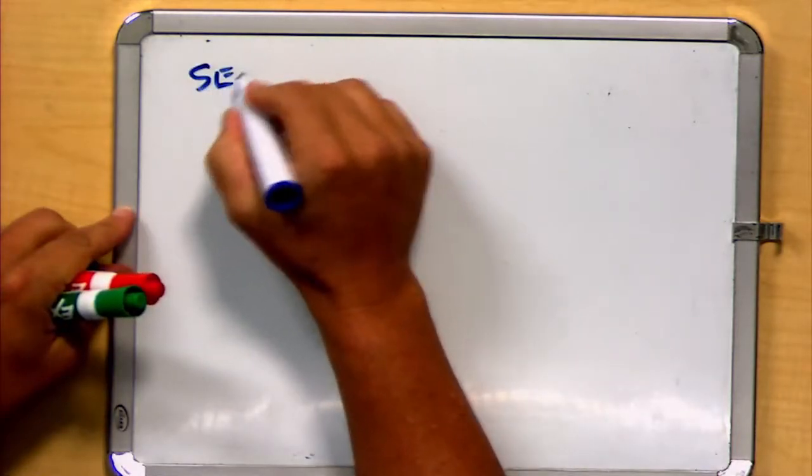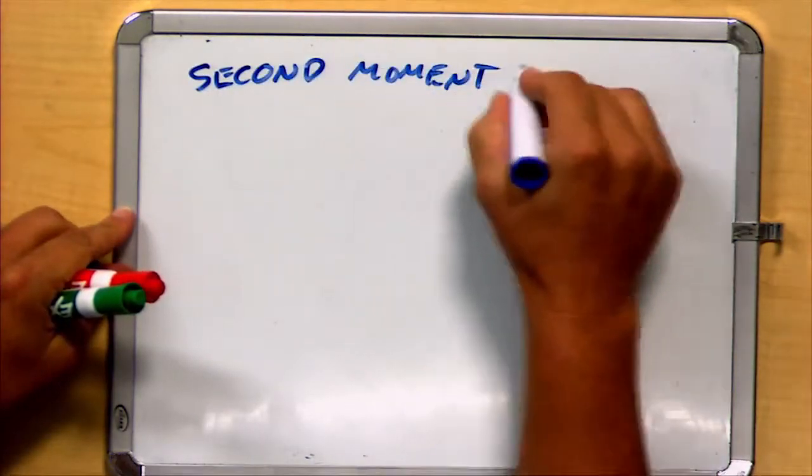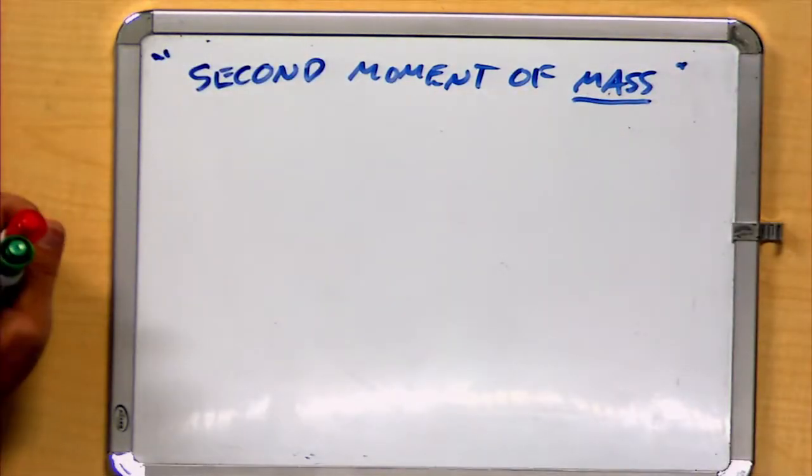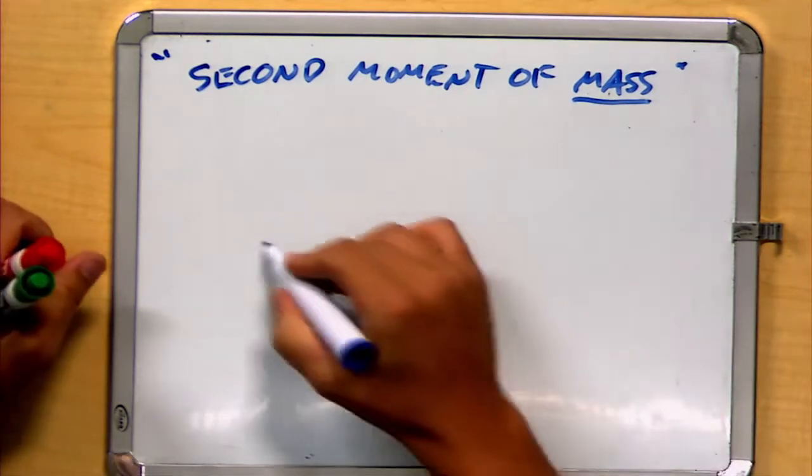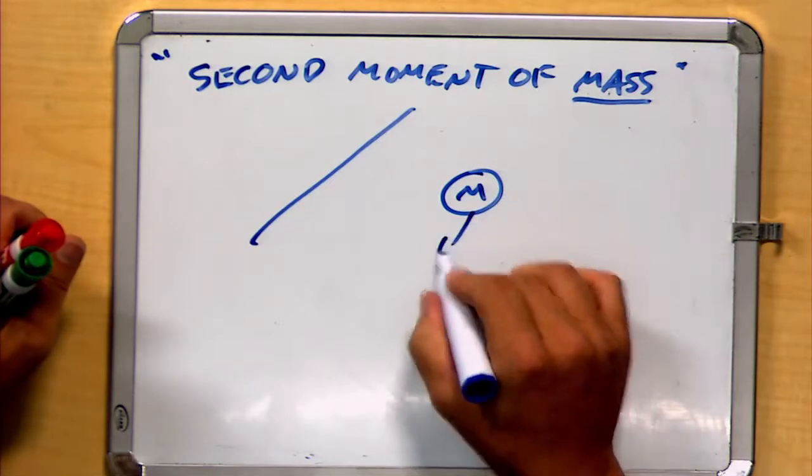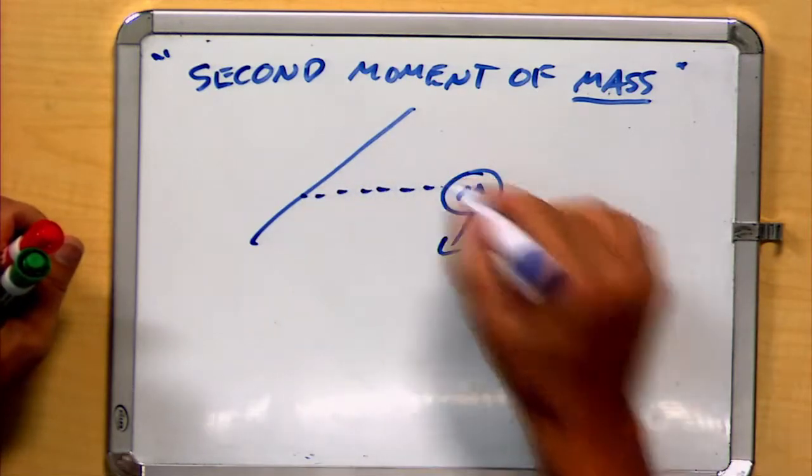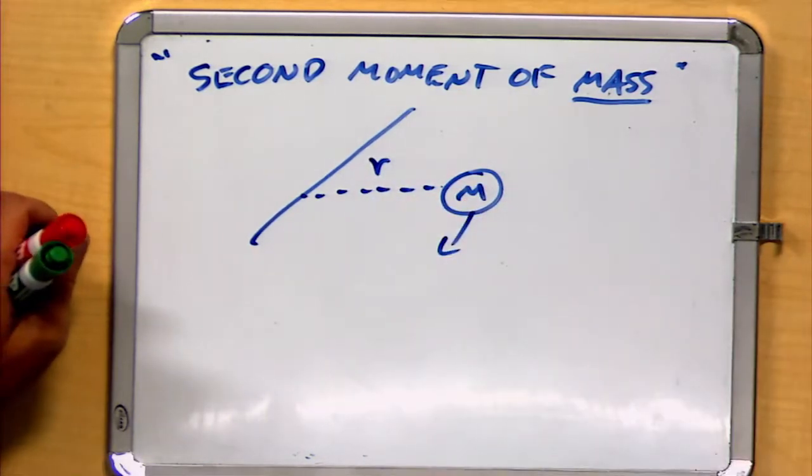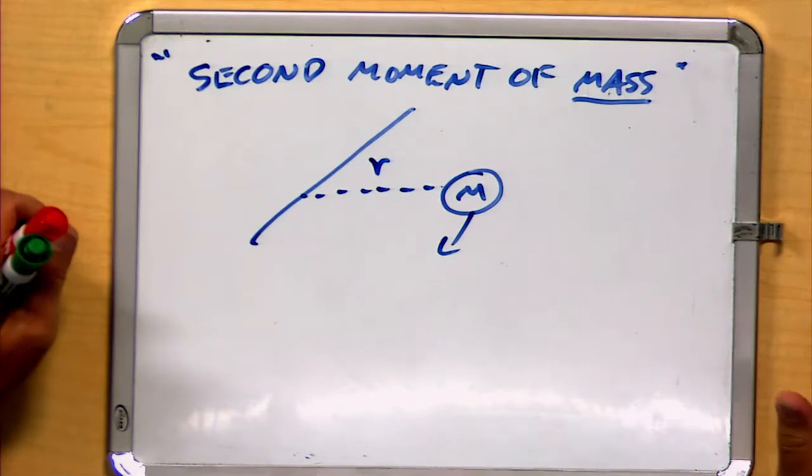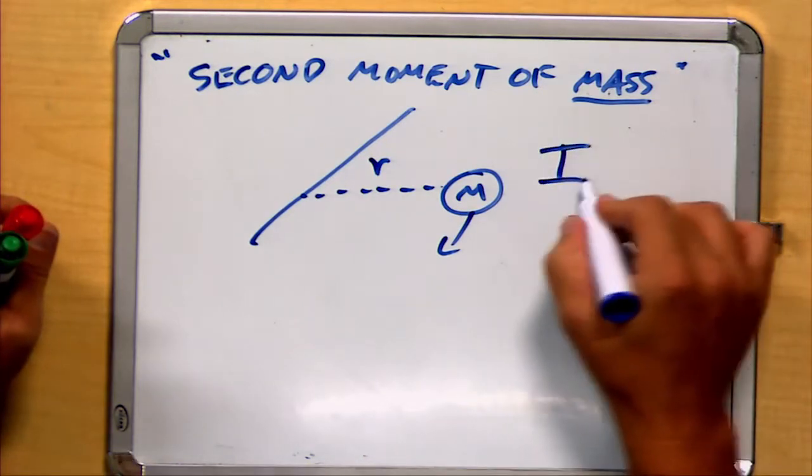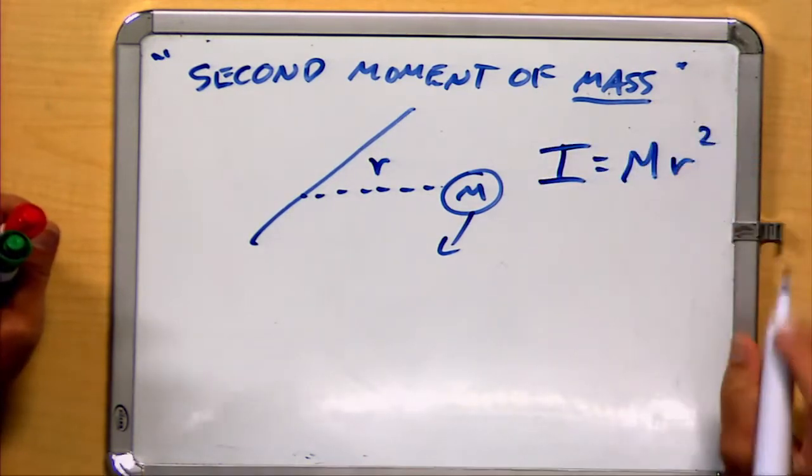The second moment of mass represents the resistance of a body to rotational moment around an axis. So if I have a mass and I'm trying to make it spin, perhaps it's attached to an axis, or otherwise related to some particular axis, at a distance r, there is a value called the second moment of mass, and it's also called the moment of inertia, and abbreviated I. I equals m r squared.